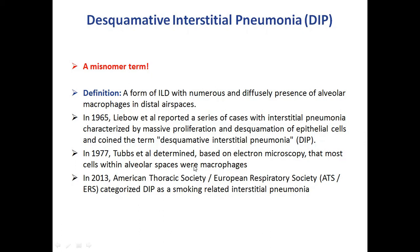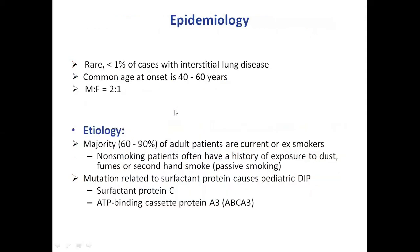Many authors also emphasize that DIP is the severe form of respiratory bronchiolitis, which we discussed in our previous video. The definition is a form of interstitial lung disease with numerous and diffusely present alveolar macrophages in the distal air spaces.